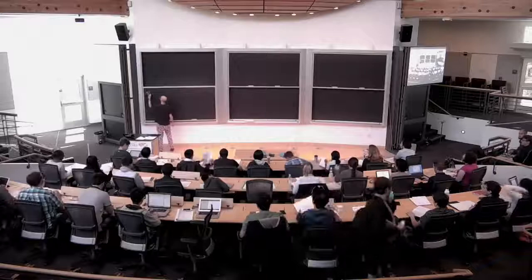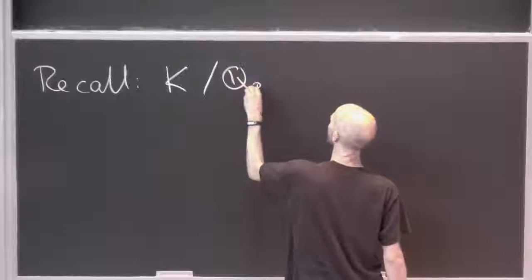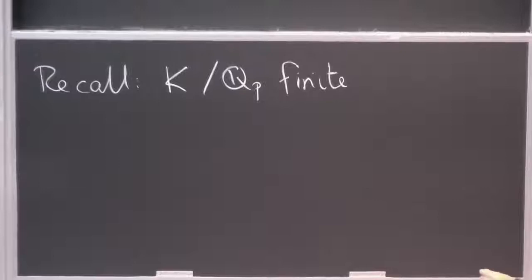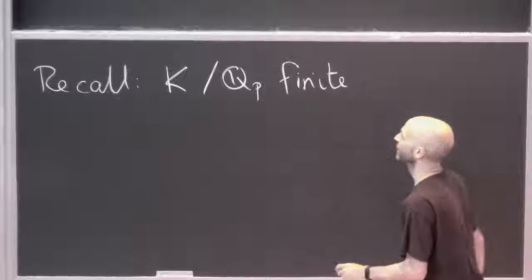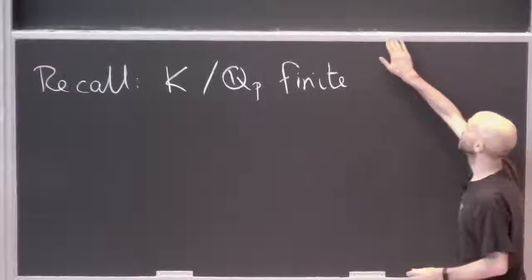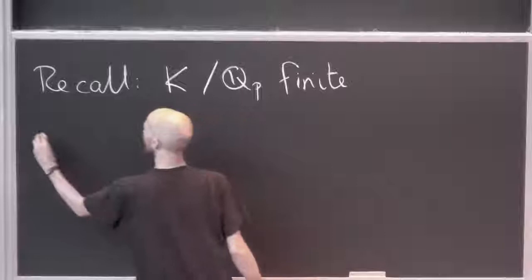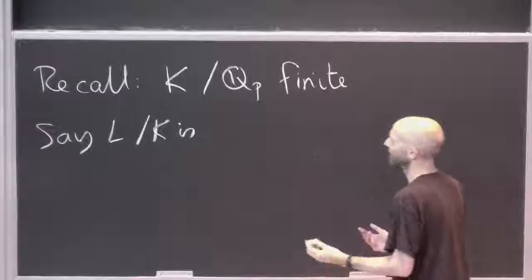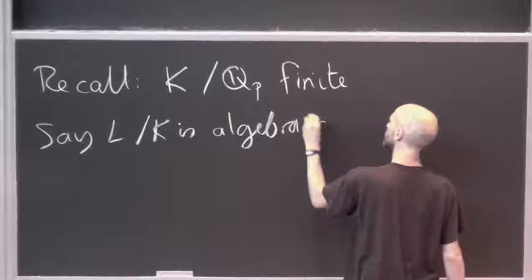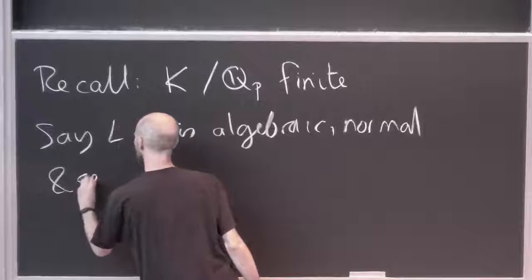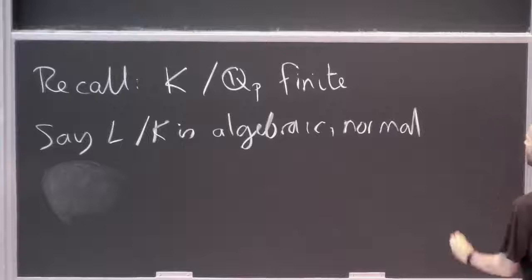So last time, recall what's going on: I've got k, a finite extension of Qp, and I was looking at L over k. I had to make some kind of design implementation decision. You could either deal with finite extensions or arbitrary algebraic extensions, but what I'm really interested in is arbitrary extensions which are only finitely unramifiable. Let's say L over k is algebraic, normal, and separable — though we don't need separable because we're in characteristic zero.